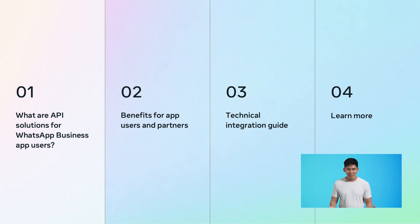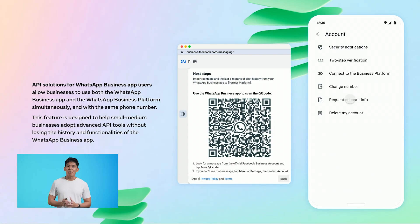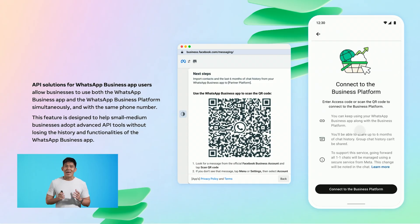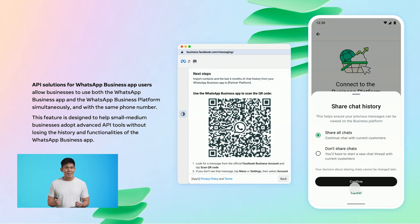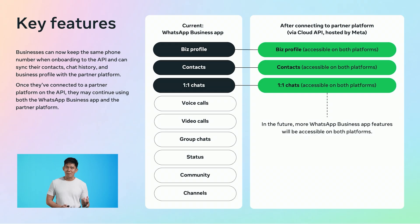So first, what exactly are API solutions for WhatsApp business app users? This feature enables you to use both the business app and the business platform at the same time, and you do not have to change your phone number to do it either. This means you keep your phone number when you onboard to the API. You can then use the WhatsApp business platform to manage one-to-one conversations while continuing to use the WhatsApp business app for group chats, calls, and status.